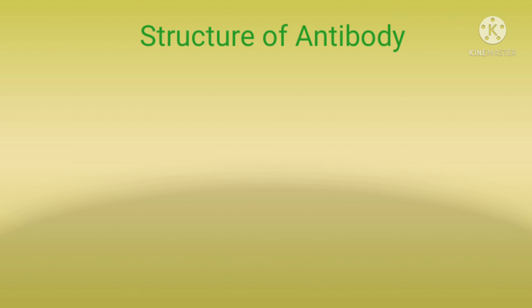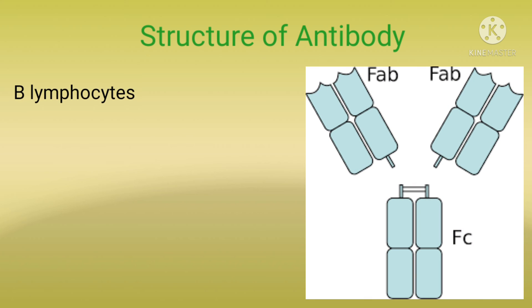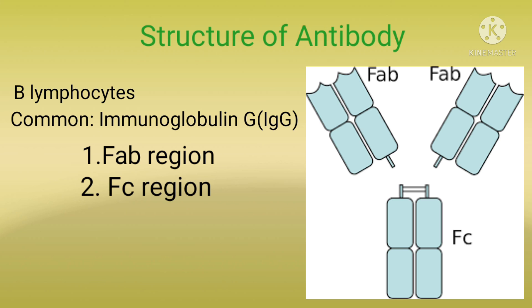To better understand radioimmunoassay, it's important to understand the structure of antibodies. Antibodies are produced by the B lymphocytes. The most common one is immunoglobulin, which is a protein composed of two main structural and functional regions. The first one is the Fab region — it contains the antigen binding site that differs between different antibodies. The second one is the Fc region, which is the region of constant structure within an antibody class.